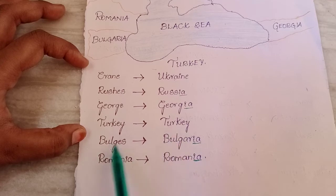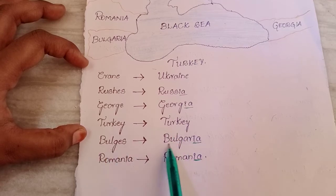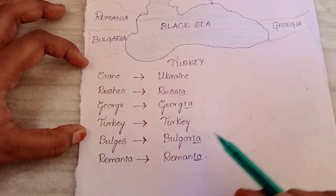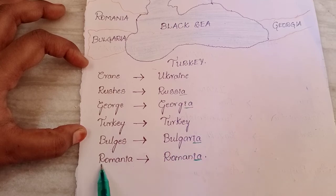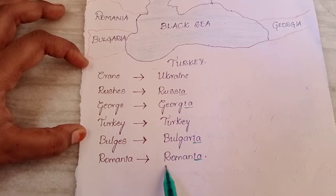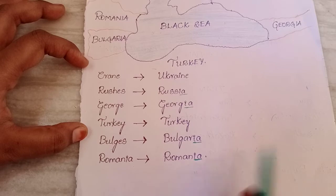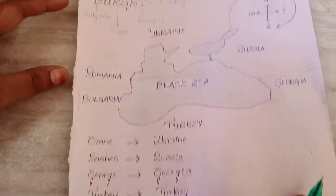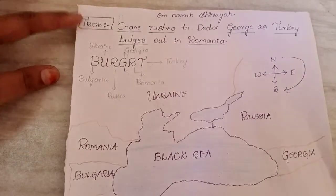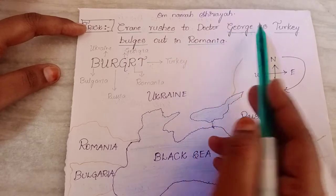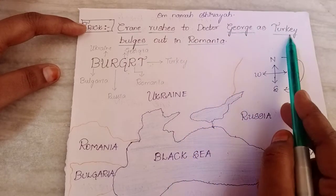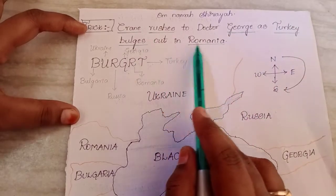'Bulges' means swelling out, and it sounds like Bulgaria. 'Romania' is used as the place itself — Romania. So the trick is: 'crane rushes to Dr. George as turkey bulges out in Romania.'